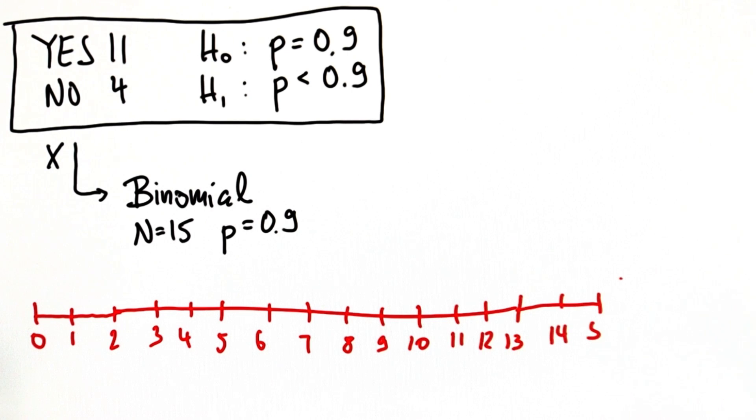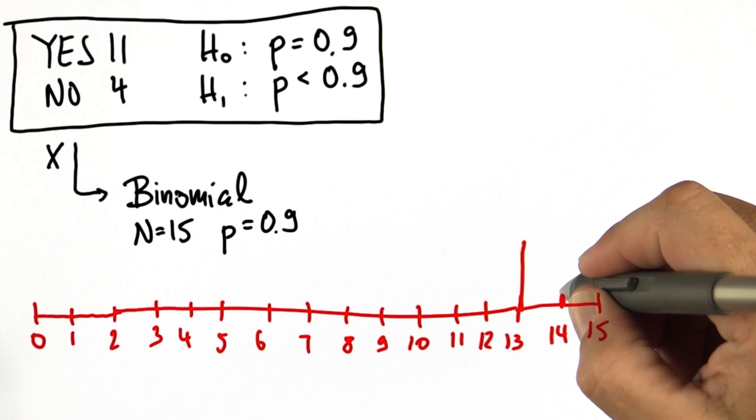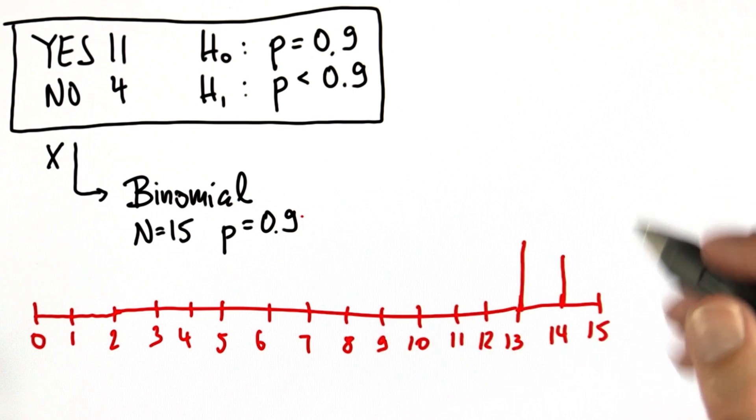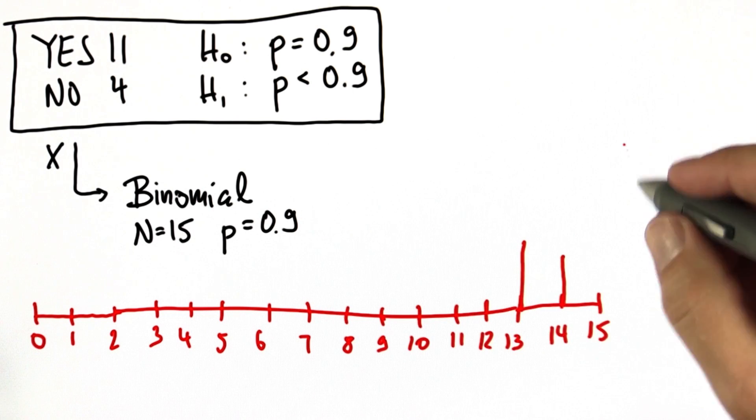So obviously in this binomial distribution there are about 16 different outcomes from 0 to 15. The most likely is 13. 14 is also pretty likely if the null hypothesis is correct. And then the probability goes rapidly down.